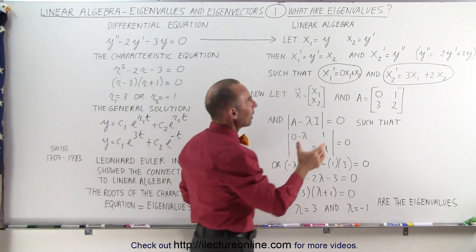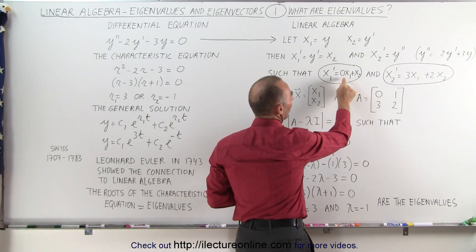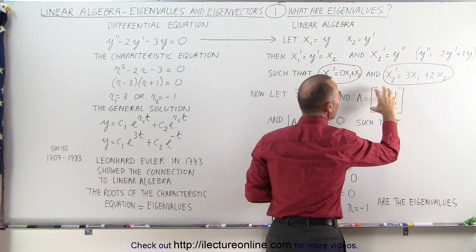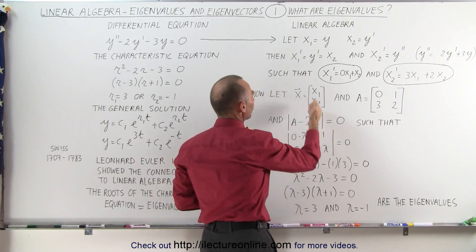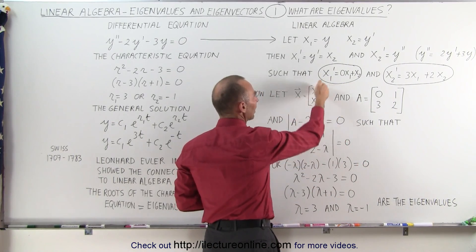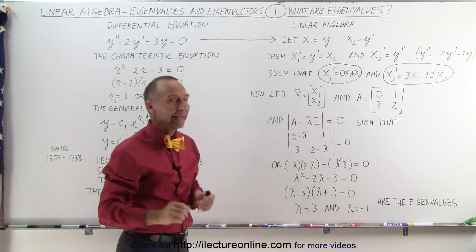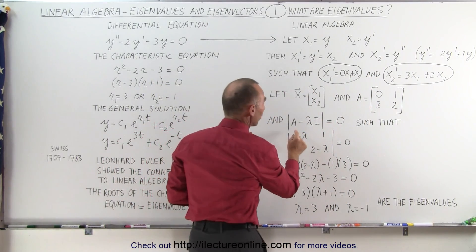Place those in a matrix, we'll call that matrix A. And then we have a general vector x, which then includes the two variables x₁ and x₂. Then if we come up with this relationship where we take the matrix which was derived from the coefficients of the differential equation.